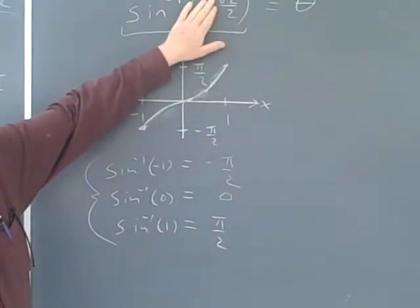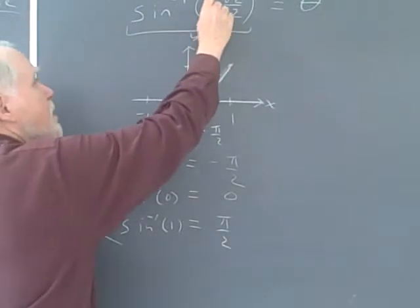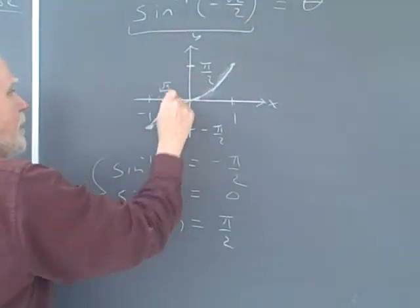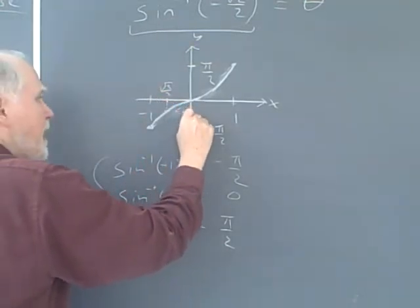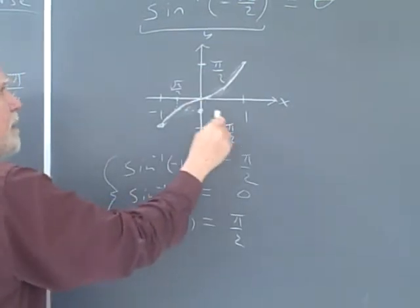Now, if it were a positive argument, I could say, well, this theta is in the first quadrant. But it's not positive. So I look at the graph, and I take a negative number, like negative root 2 over 2, or somewhere out there. I go down like this. I go over like this.